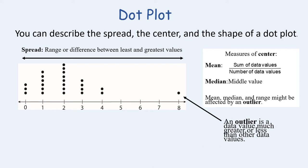The outlier is this point here at eight. It is a value, a data value much greater or less than the other data values. There is an algebraic way to identify the outlier that you'll learn in later grades, but today we're just looking at the visual representation.